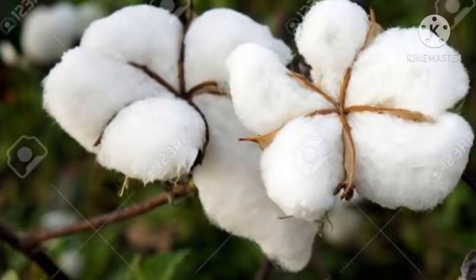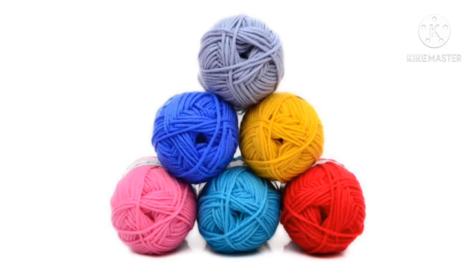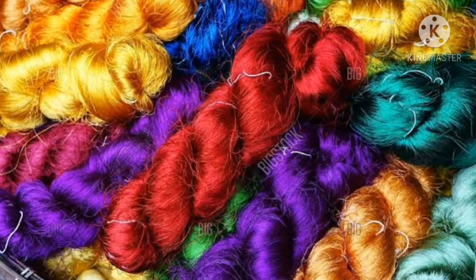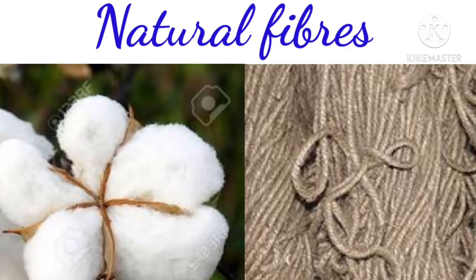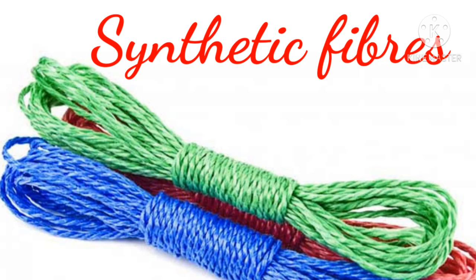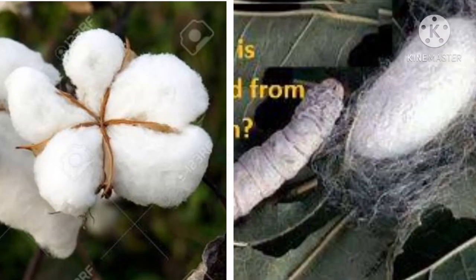Different types of clothes are worn in different seasons. Clothes are made of cotton, wool, silk and other materials. Clothes are made up of fibers, which means threads. These threads are woven into fabrics or cloth. Fibers are of two types: one, natural fibers, and two, synthetic fibers.